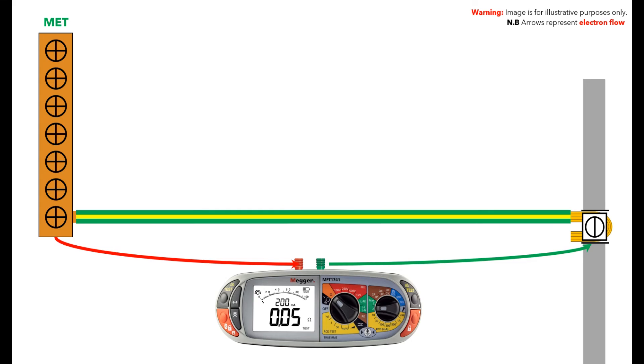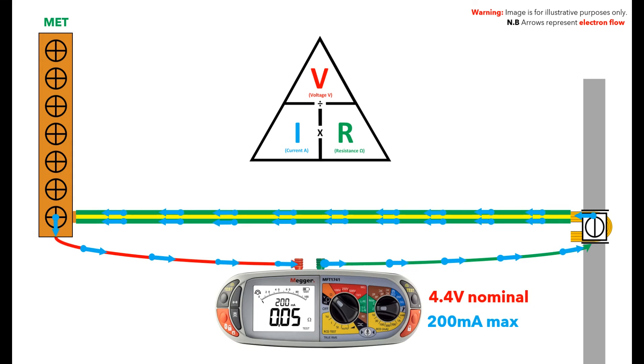If we were to look at this in the simplified model, then we would have the following arrangement. Here you can see the MET connected to the main gas supply by the main bonding conductor. You will know from my video on how the MFT works that the voltage is 4.4 volts nominal and the current limited to 200 milliamps. The electrons flow out of the low ohm resistance tester along the test lead to the bonding clamp, through the main bonding conductor to the MET, and then back into the low ohm resistance tester creating a circuit. But due to the resistance of the circuit, some of the current has been slowed down. The meter can measure and calculate the resistance using Ohm's law. Because the main bonding conductor has a low resistance due to the size of the conductor, electrons can flow more easily, which is why I represented this by using double arrows.